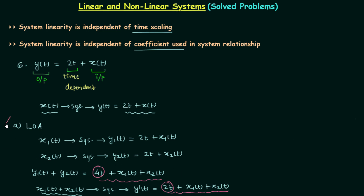Since the results are not the same, the system does not follow the law of additivity, and hence does not follow the principle of superposition — the system is non-linear. So when we have an added term which is time dependent, the system is non-linear. The same applies for a subtracted term like −2t. Now we need to check the other condition — when we have a time independent term — and for this we will take our seventh problem.